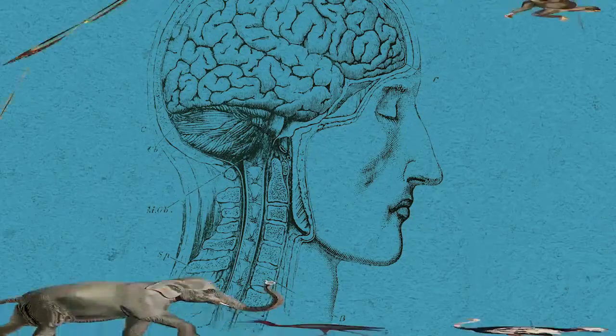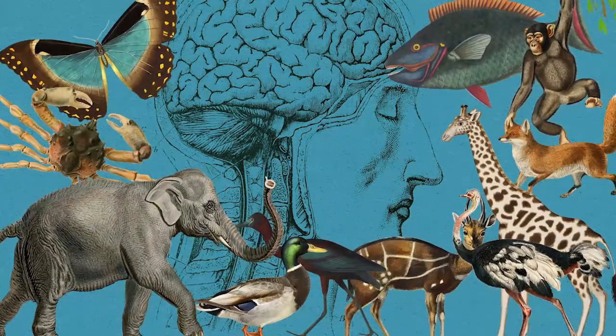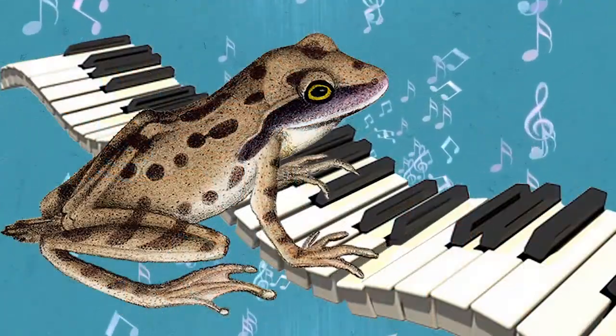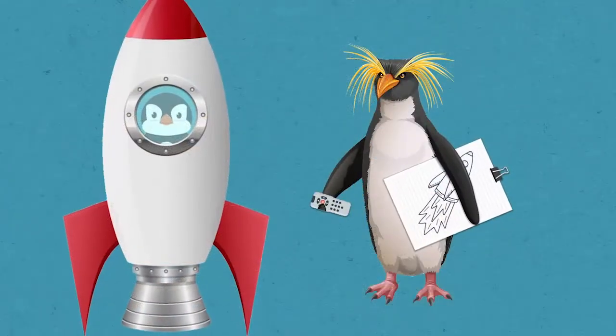But what makes the human brain special that differentiates us from other species? Why don't we see frogs composing music? Or penguins designing space rockets?